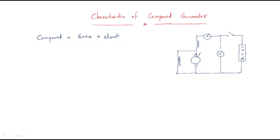Looking at the DC generator circuit: this is the armature, and for this we have a series-connected flux — this is the series flux. For the armature we also have the shunt winding, that is the shunt flux. We are connecting a load to this, and there is a switch. To measure the load voltage it is a voltmeter; to measure the current it is an ammeter.